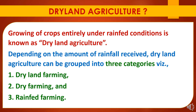What is dryland agriculture? Growing of crops entirely under rain-fed conditions is known as dryland agriculture. Depending on the amount of rainfall received, dryland agriculture can be grouped into three categories: first, dryland farming; second, dry farming; and third, rain-fed farming. Now we will discuss each type in detail.